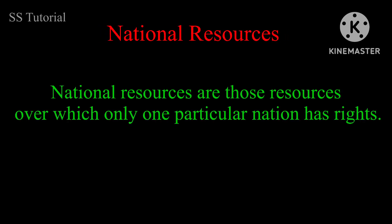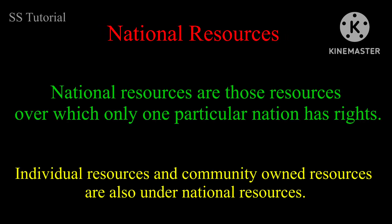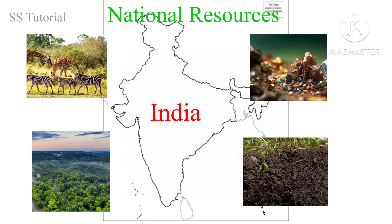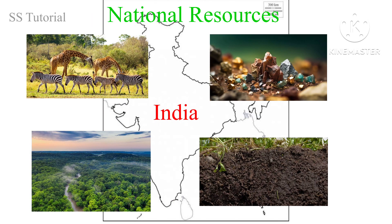National resources are resources over which only a particular nation has rights. Individual and community-owned resources are all under national resources, and for development or security purposes they can be marked as national resources. All resources found within the political boundary of a nation, and within 12 nautical miles from the coast in oceanic area, are national resources. Wildlife, forests, soil, and minerals within a country's political boundary are examples.